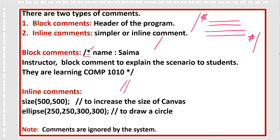Similarly for the ellipse — the ellipse function takes four parameters, and you use this command to make a circle. So this is the inline comment for the ellipse function.